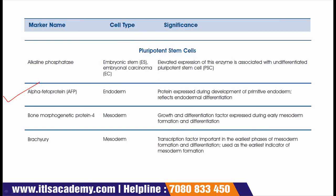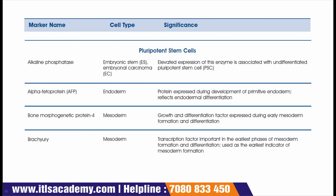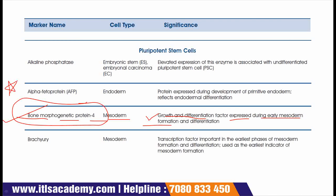The next marker is alpha-fetoprotein. The cell type is endoderm. Alpha-fetoprotein is a protein expressed during development of primitive endoderm and reflects endodermal differentiation. The next marker is BMP4, or bone morphogenic protein, which is a very important marker studied across various kinds of cells. BMP4 is used for mesodermal cells and is a growth and differentiation factor expressed during early mesoderm formation and differentiation.